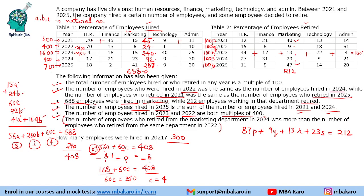Let us look at higher values of P. We cannot take P beyond 1: if P=2, that gives 174. Even if we take the minimum value of 1 for Q, R, S — that is 9+13+23 = 45 — adding 45 to 174 gives 219, which exceeds 212. So it is not possible to take P=2, meaning P must be 1.